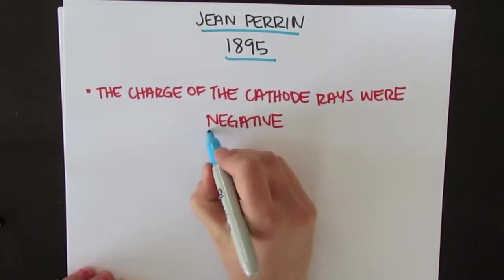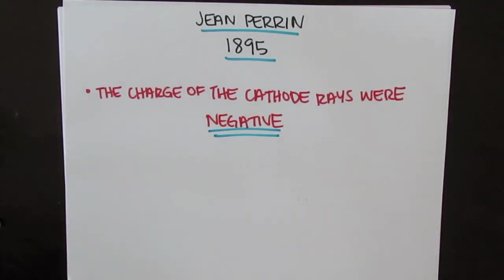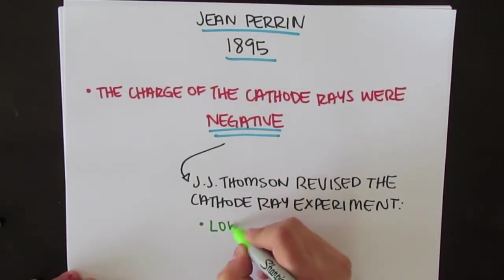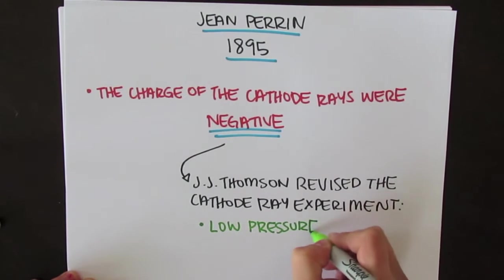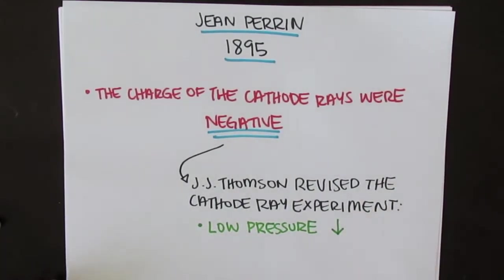J.J. Thomson revised the cathode ray tube experiment by adding in several factors. Firstly, he made sure that it had a very low pressure and restricted the amount of air within the apparatus.